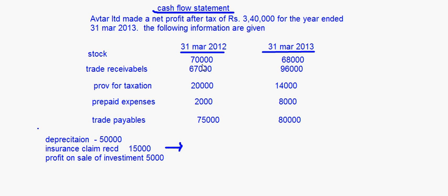For decrease in current assets and increase in current liabilities - provision for taxation is a current liability but it has decreased, so it won't be added here. Prepaid expenses - note that prepaid expenses is a current asset, not a current liability, so that will not come under this category either.